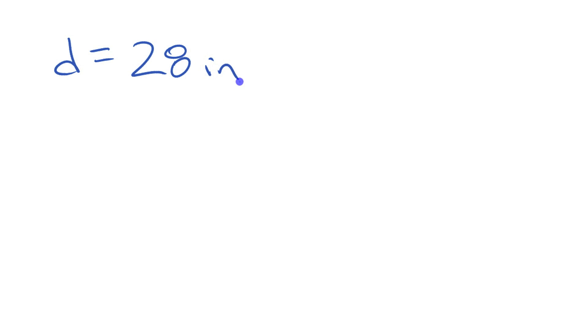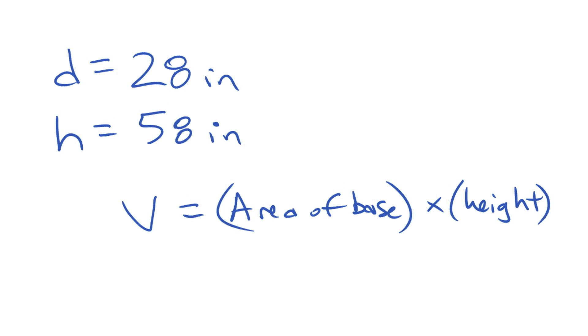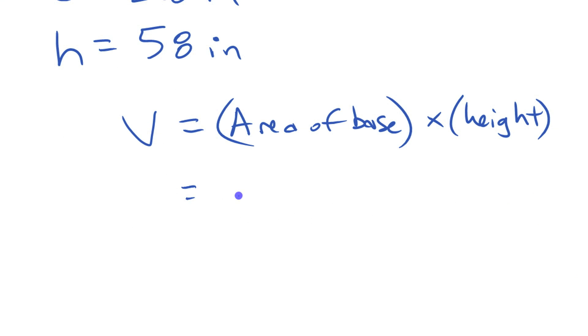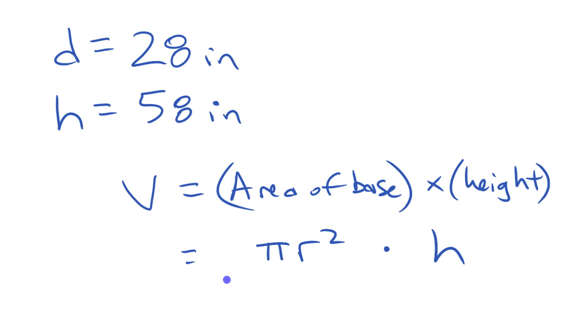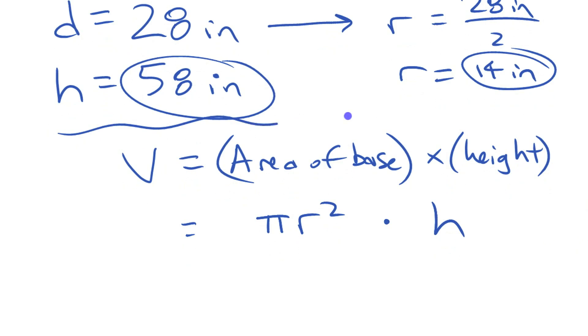What we had is we have the diameter was 28 inches and we had the height, which we'll call h, was 58 inches. Our volume is going to be equal to area of base, the circle, times the height. Or if you want it as more of a formula with the variables, that's going to be equal to area of a circle is π r² times h, we're using h for height. Now we don't have the radius but we do have the diameter, and of course the radius is the diameter divided by two, so 28 inches divided by two, or in other words 14 inches, right? So we have 14 inch radius, 58 inch height.